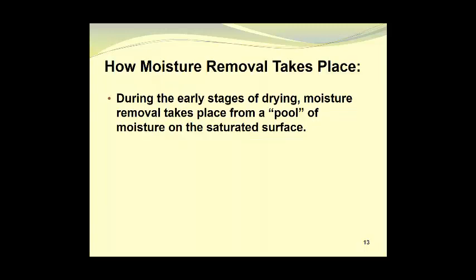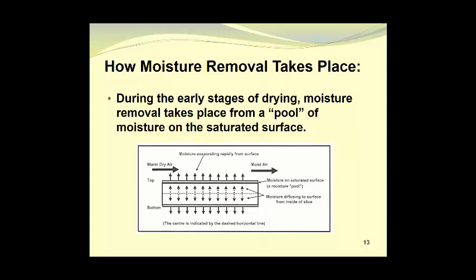Now let's take a look at how moisture removal actually takes place. During the early stages of drying, moisture removal takes place from a pool of moisture on the saturated surface of the material. Here we see a representation of a piece of material being dried with moisture on the saturated surface, which essentially forms a pool of moisture from which the warm dry air moving across the surface can evaporate that water and take it out of the dryer.